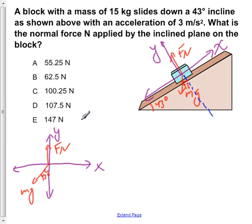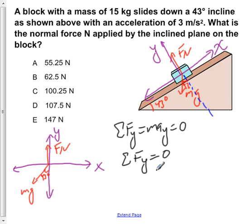Now, if we write Newton's second law for the y direction, sum of Fy is equal to may. We know that the object is not accelerating off the plane, so we know that ay is equal to zero. So from this, we can tell that the sum of Fy is equal to zero.